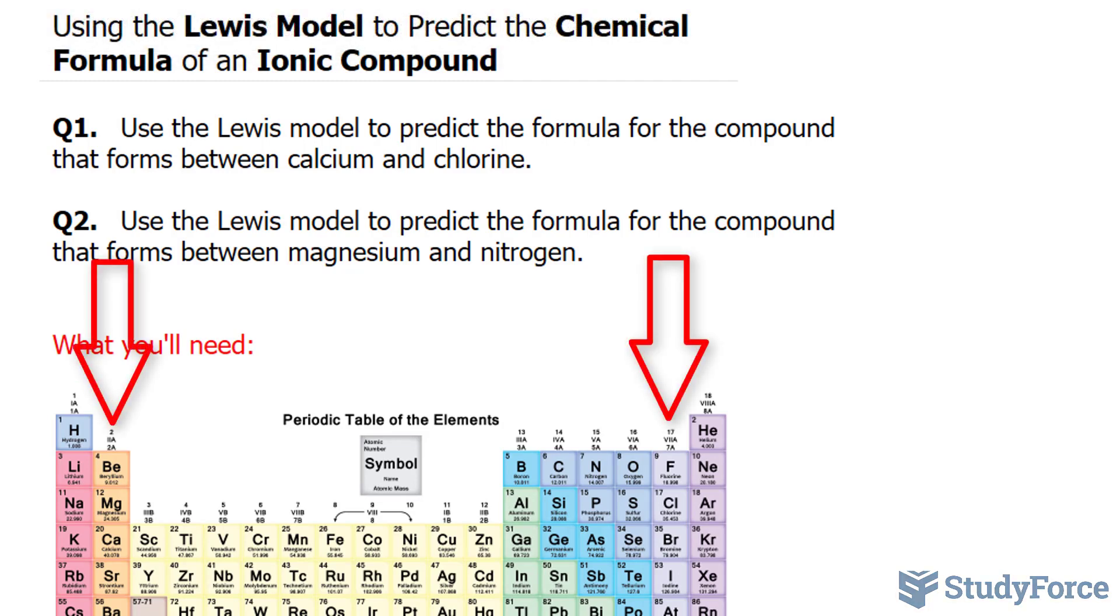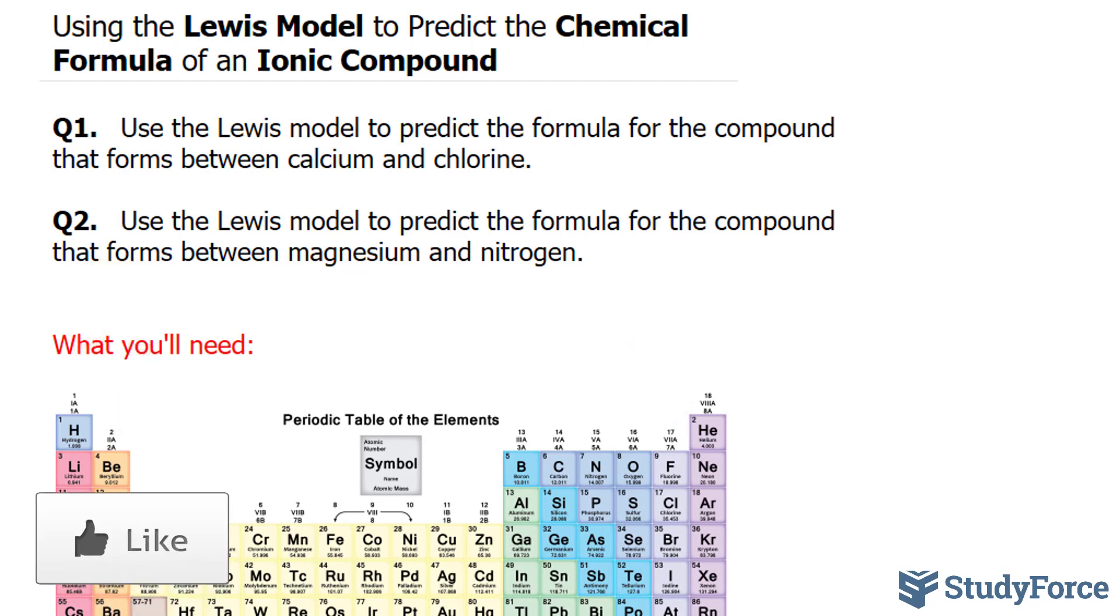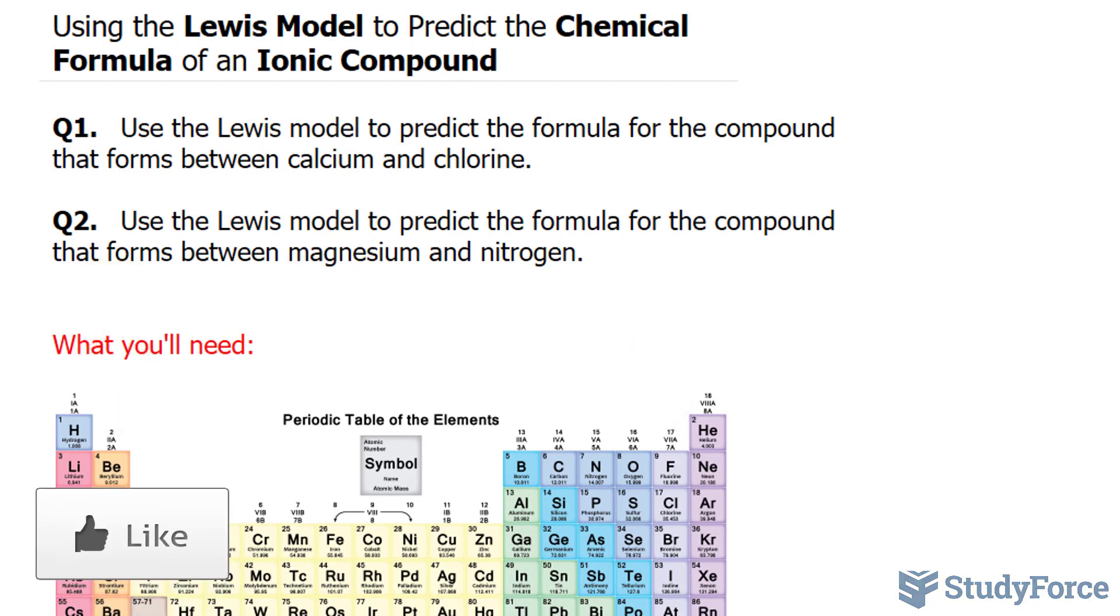And that's determined by their group number in the periodic table. So, what you see underneath is the periodic table, and we'll locate calcium, it's right here. And chlorine is found right here, the last group before the noble gases.